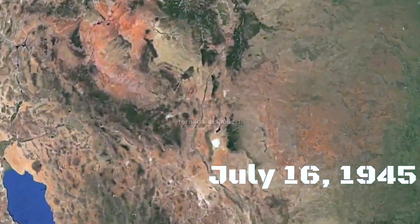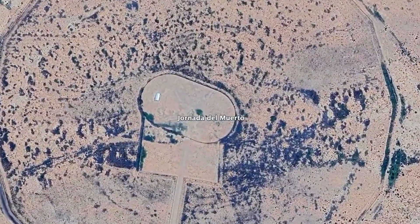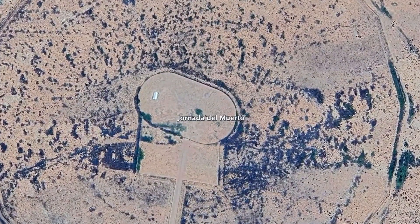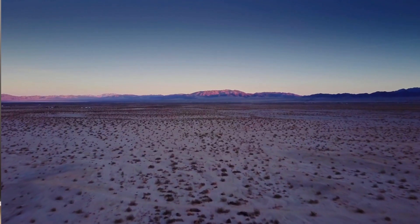July 16th, 1945, 5:30 am. The sun isn't even up yet, but the New Mexican desert of Jornada del Muerto in the United States suddenly lights up with the power of a dozen suns.